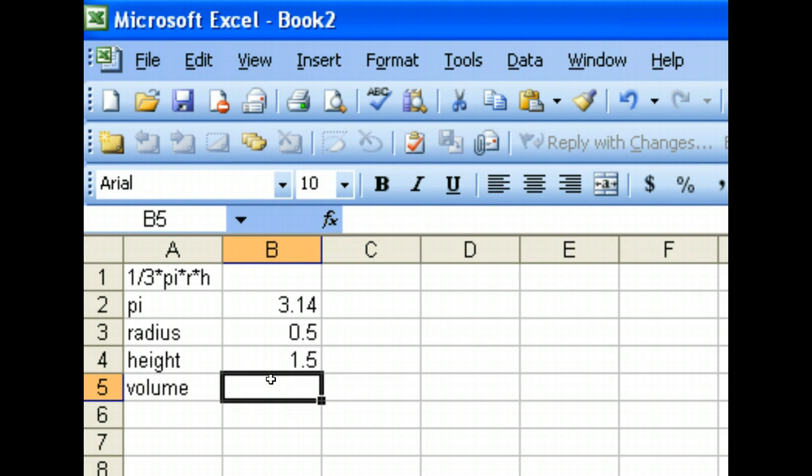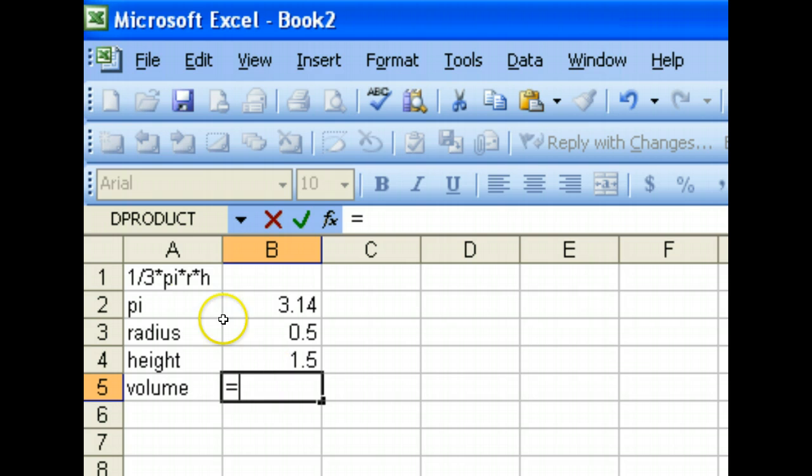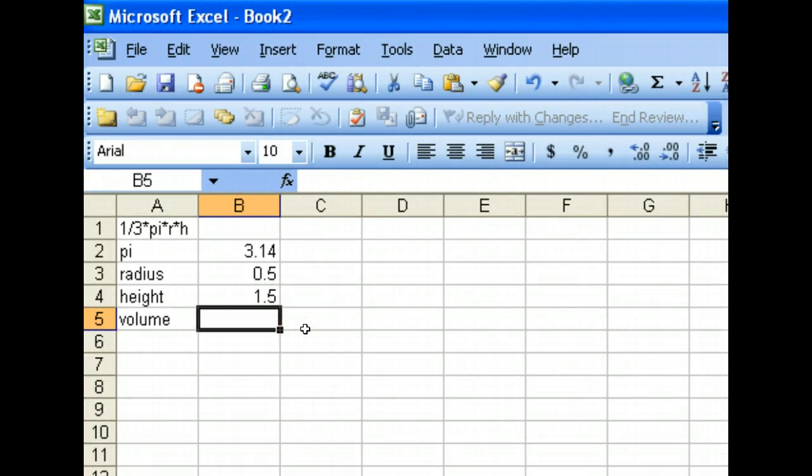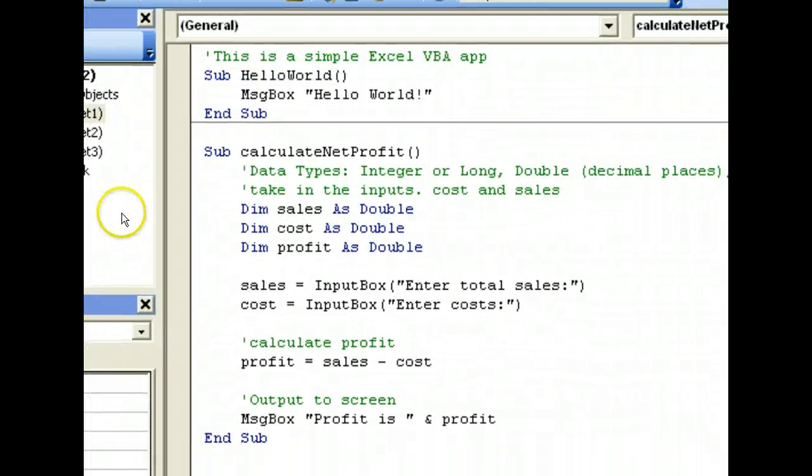Of course, we can do that in Excel which is just to put equals and then you have this entire formula and then it will work fine. But we'll be using Excel VBA to do this. Now, to do this, let's go back to our code editor.